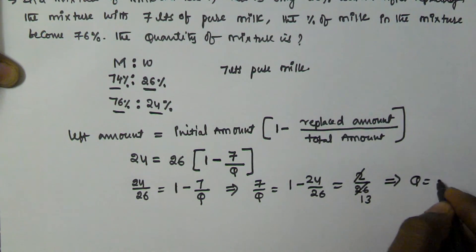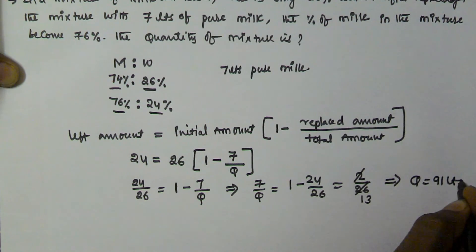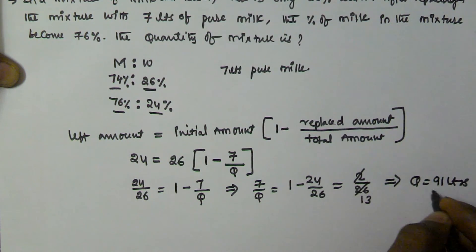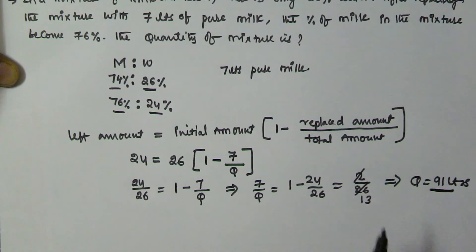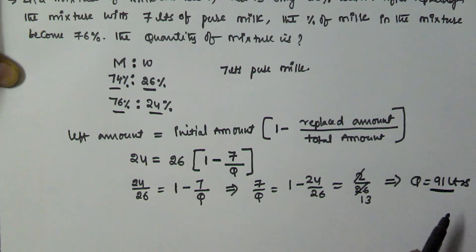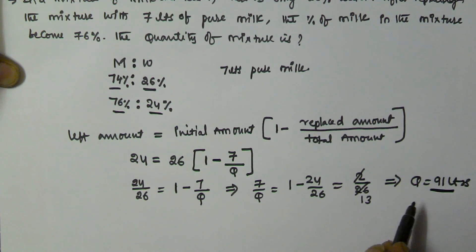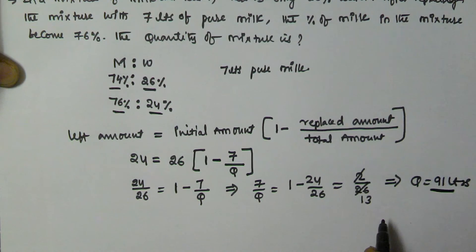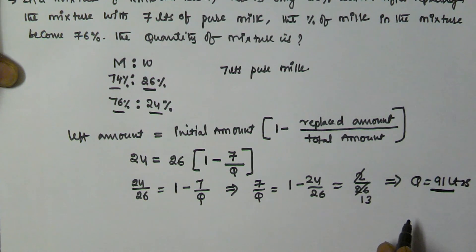Therefore q = 91 liters. The quantity of the mixture is 91 liters. I hope you got this one — thank you very much for watching this video, please subscribe to my channel.